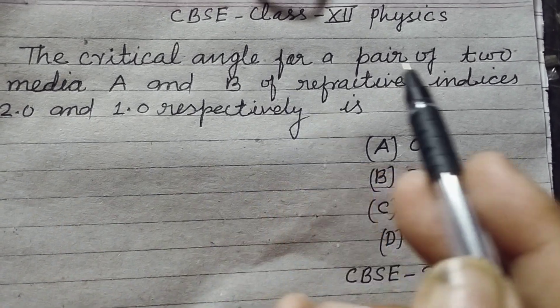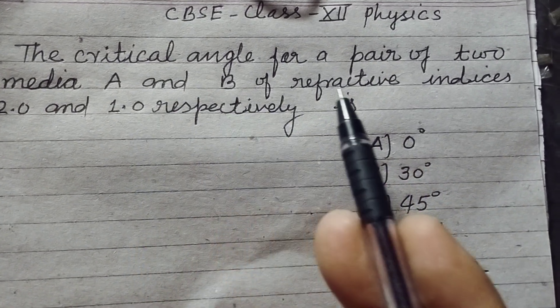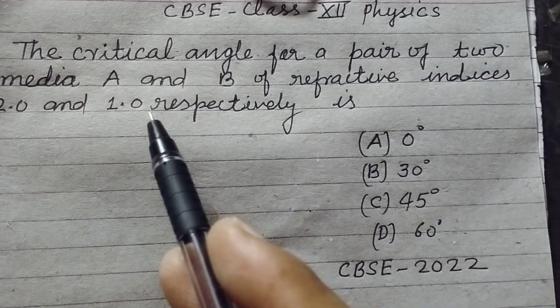The critical angle for a pair of two media A and B of refractive indices 2.0 and 1.0 respectively is: